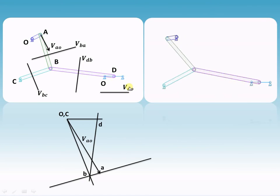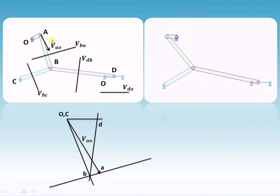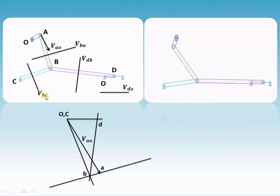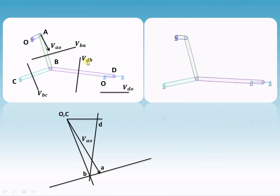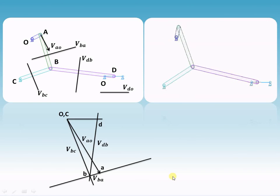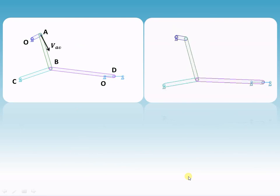Now we need to assign directions. For velocity of A with respect to O, the arrow must be towards A. For velocity of B with respect to A, the arrow must be towards B. For velocity of B with respect to C, the arrow must also be towards B. For velocity of D with respect to B, the arrow must be towards D, and for velocity of D with respect to O, the arrow must also be towards D.